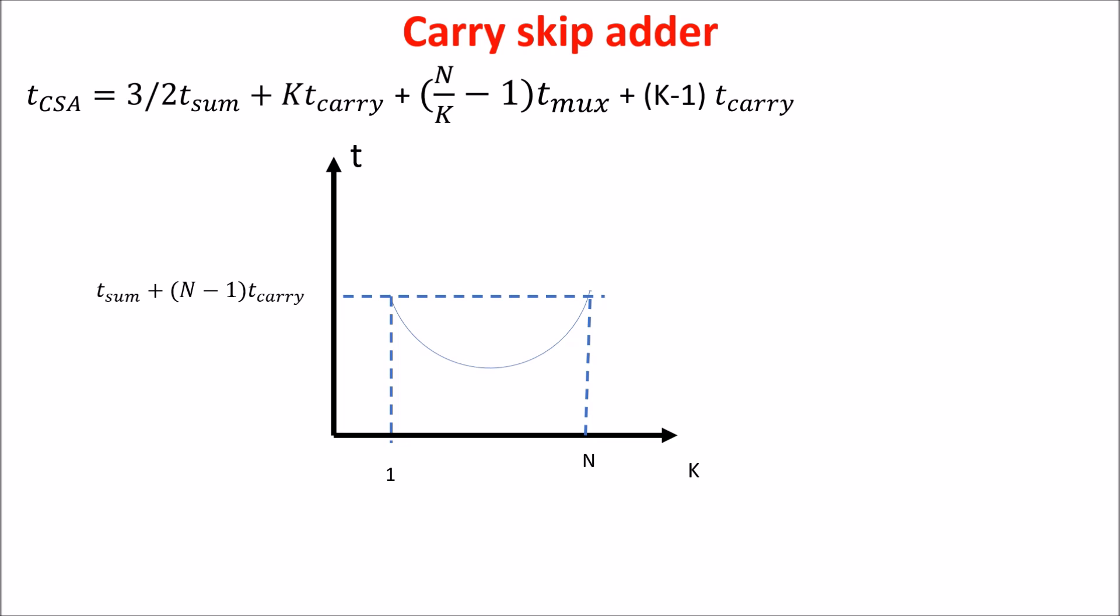So, plotting the carry skip adder delay as function of K, we have the two extreme points with the delay of K equals to that of the ripple carry adder, but there is a minimum between them, and for finding it, we derive the delay T carry skip adder with respect to K equating to zero. So, this is equating to zero, and isolating K, we find the optimum value of K that give us the minimum total delay. Of course, we have to take an integer value of K.